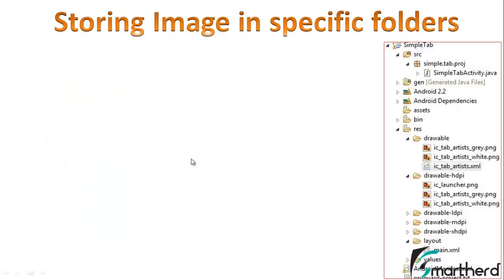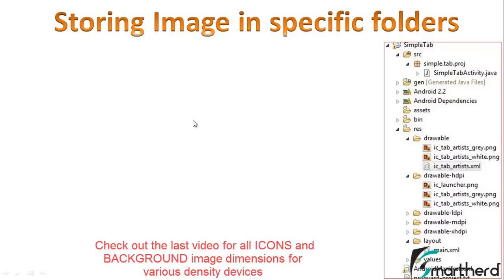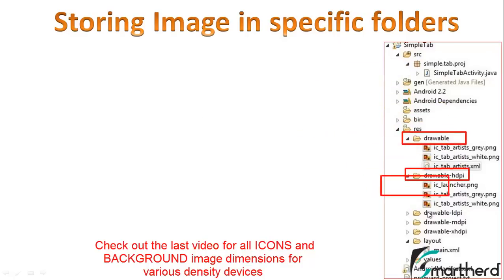In the last video we saw how to create images that will make your application compatible with all the devices. Now the question arises: where are you going to store all those images? We store images in folders like drawable, drawable-hdpi, drawable-ldpi, mdpi, and xhdpi. All these folders that we saw during our previous tutorials are meant to store the images.